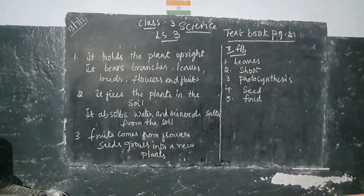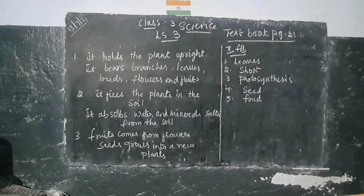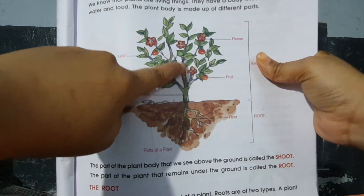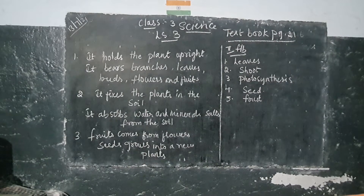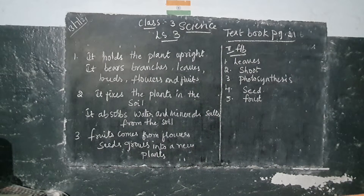Now, stem. Stem is the main part of the shoot. Some plants have very hard and strong woody stems, like coconut trees and neem trees. The function of the stem is to hold the plant in an upright position. It bears branches, leaves, flowers, and fruits.